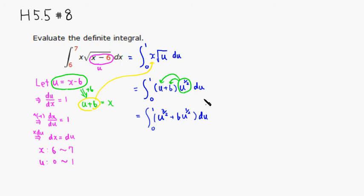With respect to u. So this is just going to be a power rule. Add 1 to the power, so u to the 5 halves divided by 5 halves is the same thing as multiplied by 2 fifths. And plus 6 is just a constant multiple. Add 1 to the power, so 3 halves. Divide by 3 halves is equivalent to multiplied by 2 thirds. Then you're going from 0 to 1.